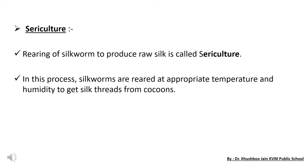The next topic is sericulture. What do we mean by sericulture? Sericulture is the rearing of silk worms to produce raw silk. What do we mean by rearing? Rearing means simply to care for, breed, and feed animals for producing food or clothing from them. So sericulture is the rearing of silk worms to produce raw silk. 'Seri' refers to silk worm and 'culture' means to produce from them.